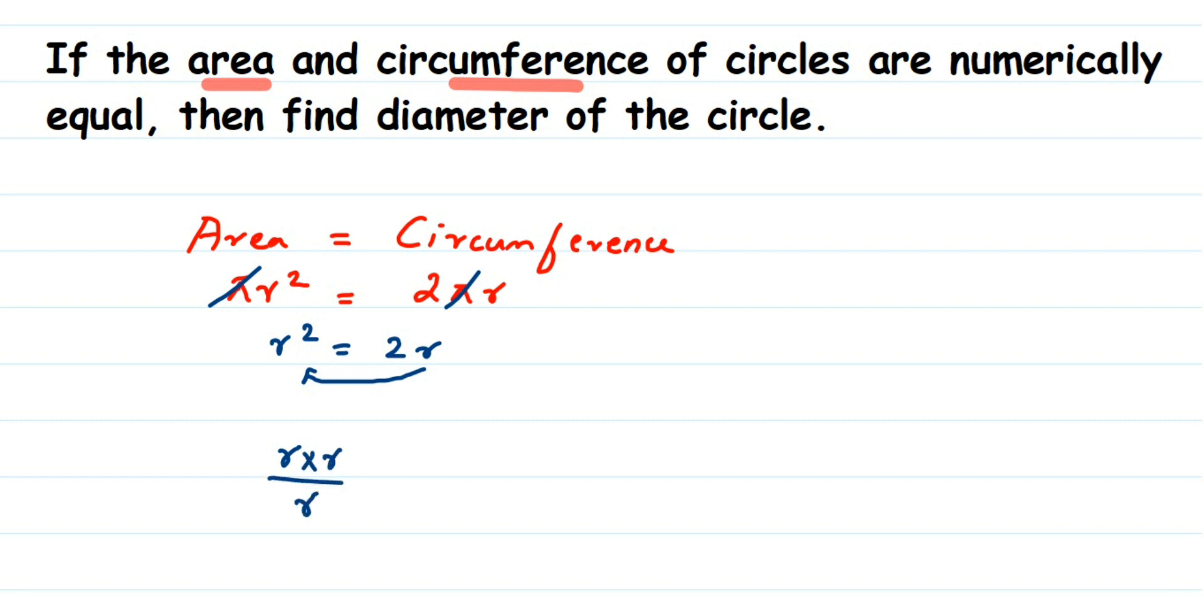And we're transposing this r, so it's going to come in division. So this is equal to 2. We're going to cancel one r here in the numerator and denominator. Therefore, we got r is equal to 2.